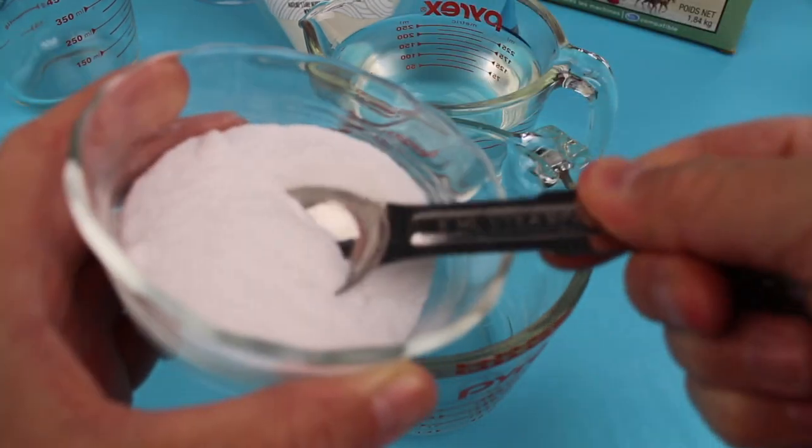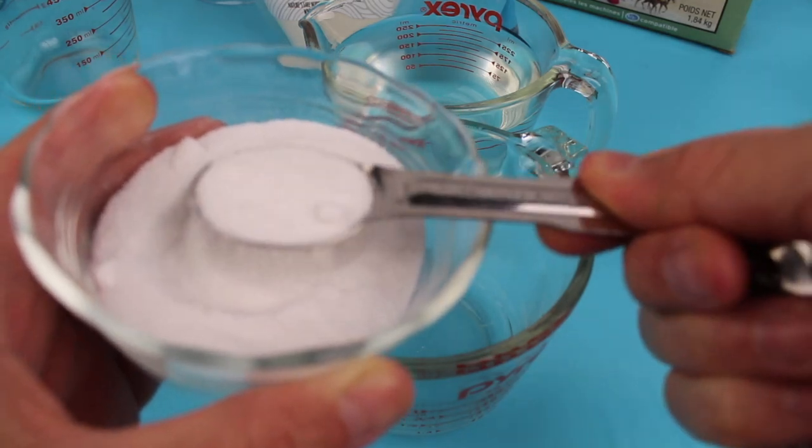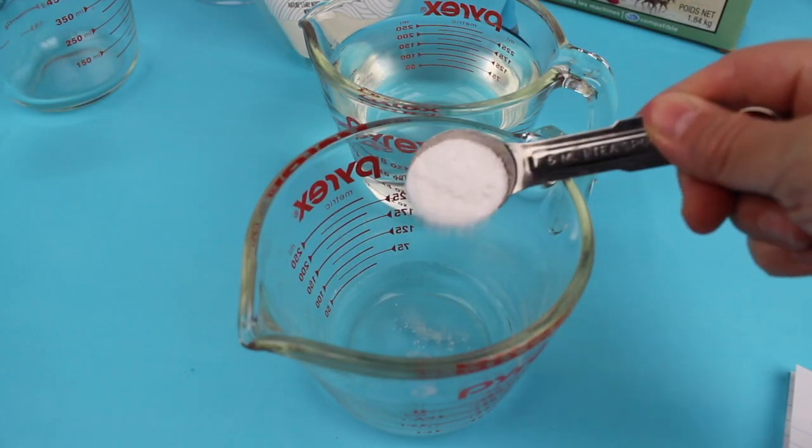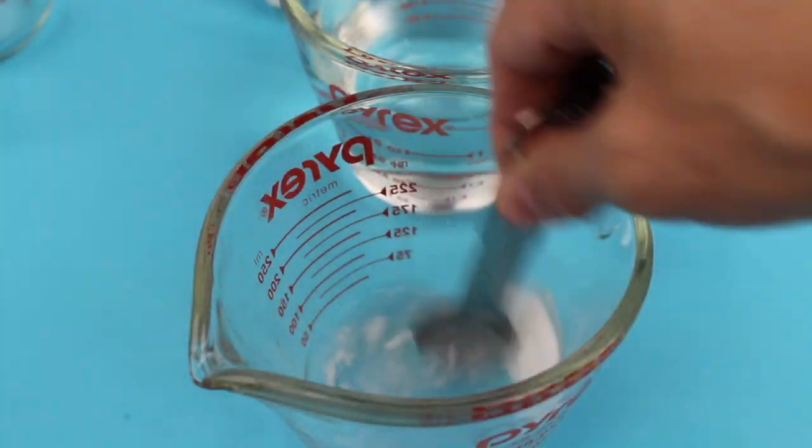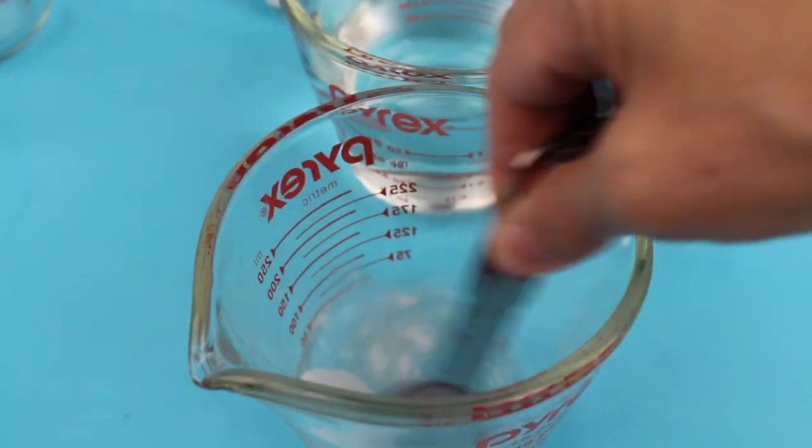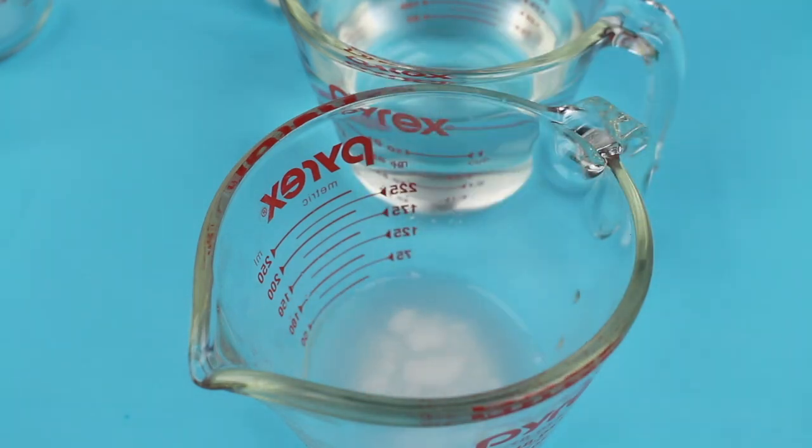Now let's add 1 and a quarter teaspoons of borax. One and a quarter. Give that a stir and let it sit for a little bit.